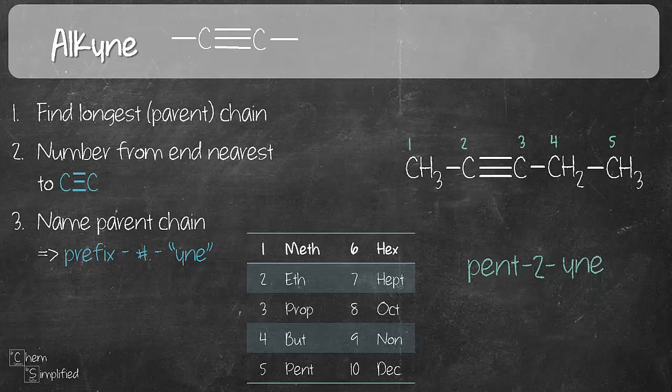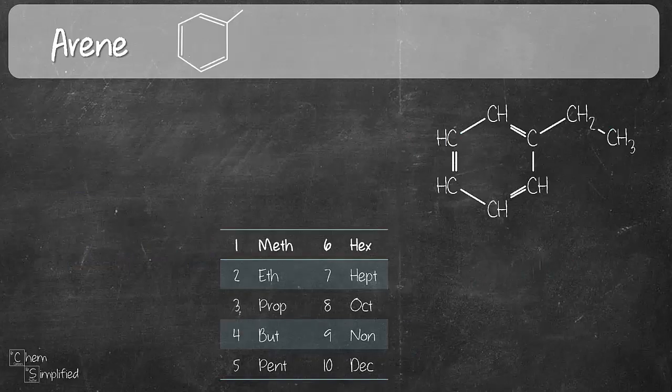And then we're going to name the parent chain. Same thing as well: prefix plus the number plus -yne. So in our example, there are 5. So 5 is pent, P-E-N-T. And then the number, same deal. The triple bond is between carbon 2 and carbon 3, so always go with a smaller number. So it's hyphen-2-hyphen and then Y-N-E. So like I've mentioned before, whenever you have alphabet and number, please make sure you insert the hyphen. That is very important.